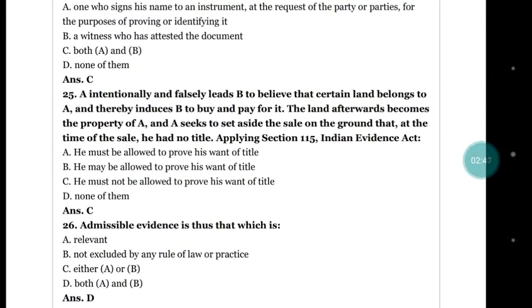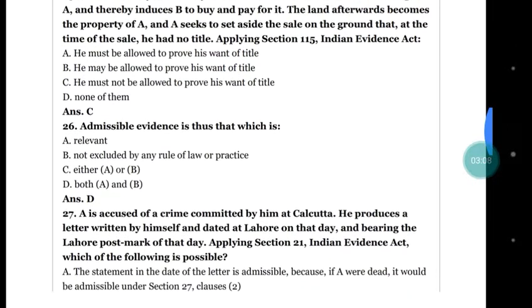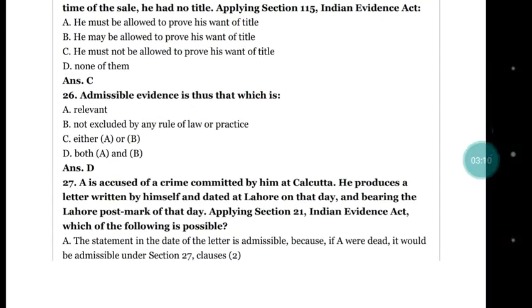Options: (a) he must be allowed to prove his want of title; (c) he must not be allowed to prove his want of title; (d) none of them. The correct answer is (c) he must not be allowed, because he had already given his consent for that contract and later he got that property, so he cannot be allowed.